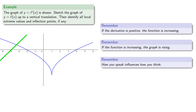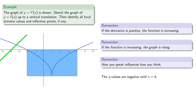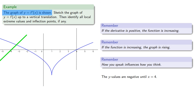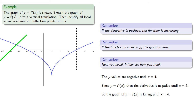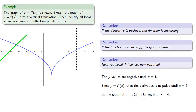Then the y values are negative until x equals 4. Since y equals f prime of x, the derivative is negative until x equals 4, and so the graph of y equals f of x is falling until x equals 4. We continue our graph by falling until we reach x equals 4.